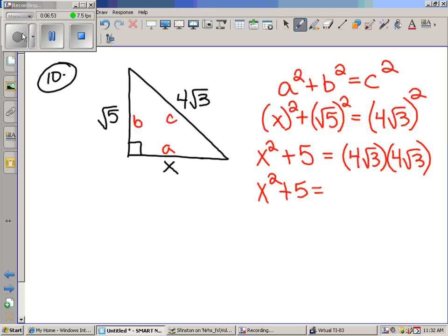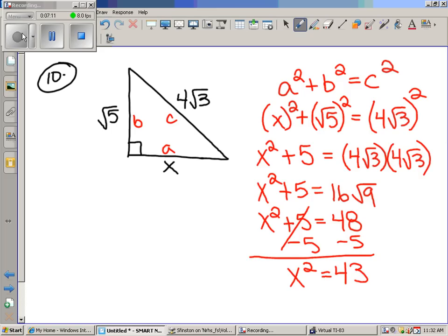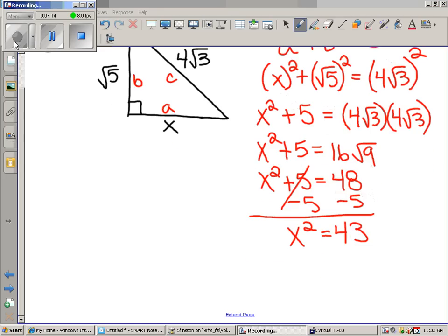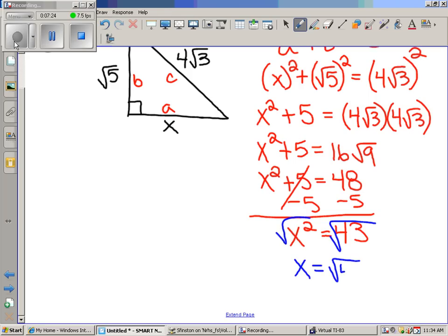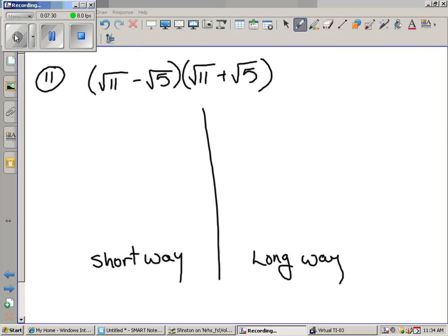So we got X squared plus five equals—let's write it out. That's 16 times the square root of nine, and that's 16 times three, that's 48. So X squared plus five equals 48. We're going to subtract five from each side. X squared equals 43. How do you find out how much X is? You square root both sides. X is going to be equal to the square root of 43. And I think that should be the answer you're looking for.